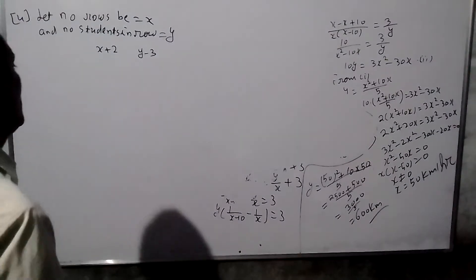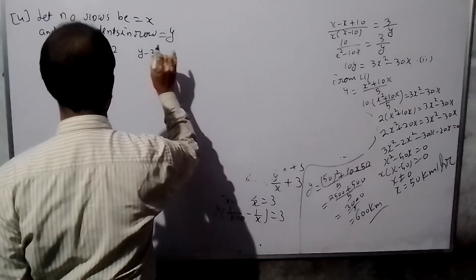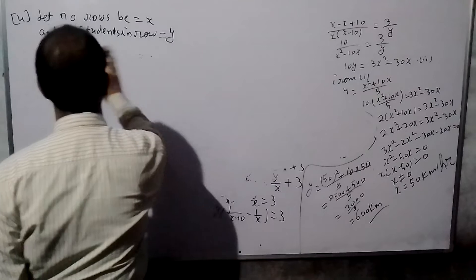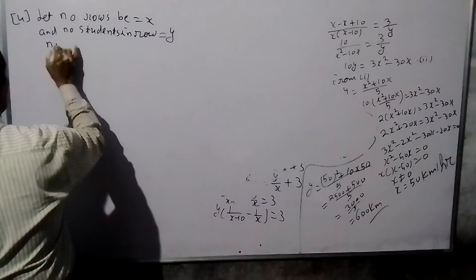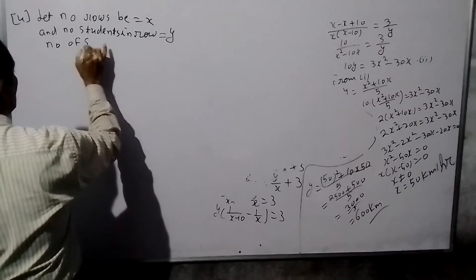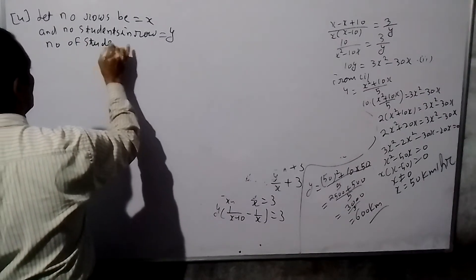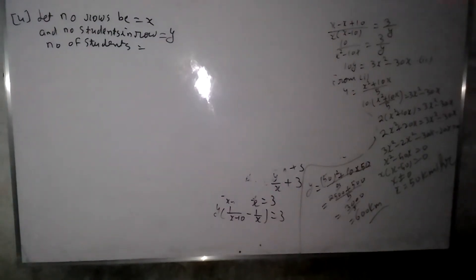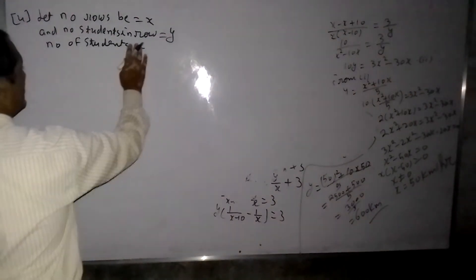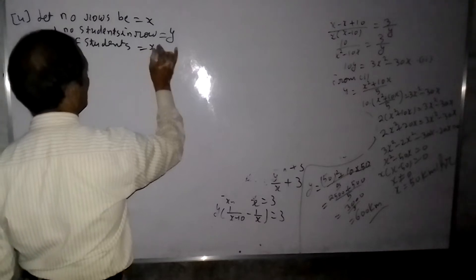We will let the number of students be represented by variables. Let X be the number of rows, and Y be the number of students in one row. So the total number of students is X into Y.